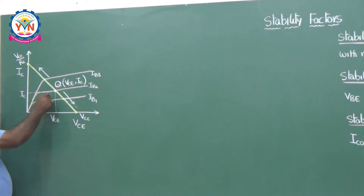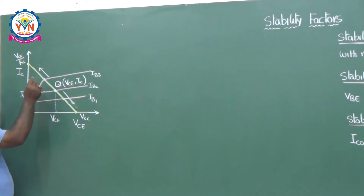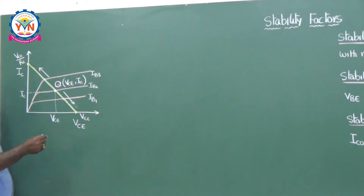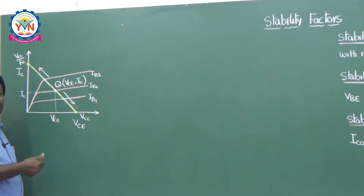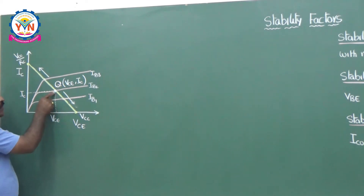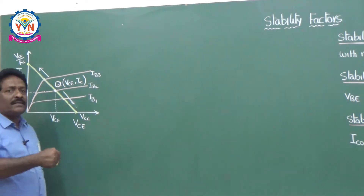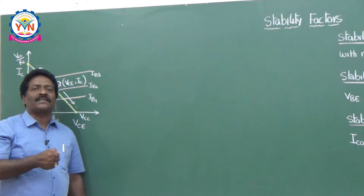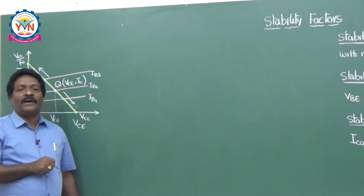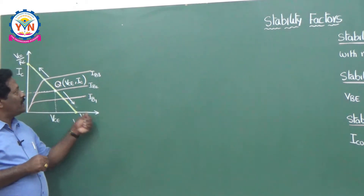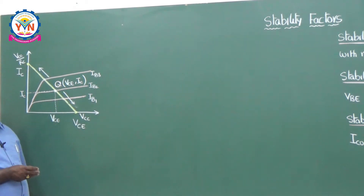To fix the operating point and make it stable, we have used different types of circuits in the last class. Now I would like to identify which biasing circuit is the best by calculating the different stability factors.